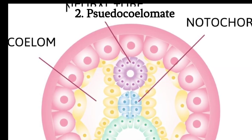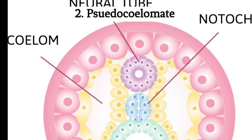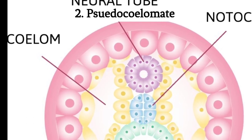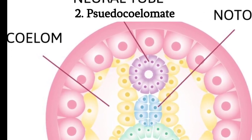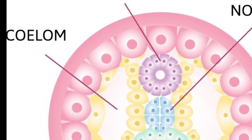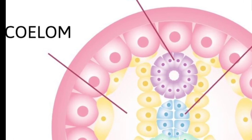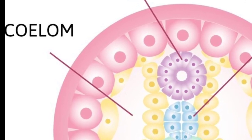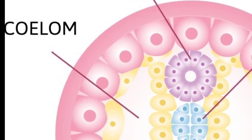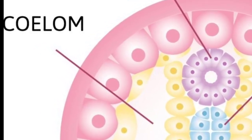2. Pseudocoelomate body cavity. They have a body cavity called a pseudocoelom, which is not fully lined with mesodermal tissue as in true coelomates. This cavity provides space for organ systems.